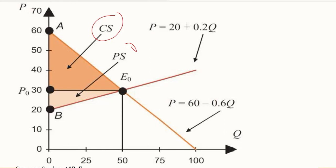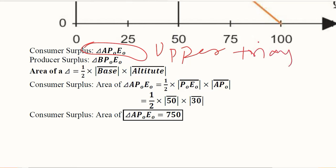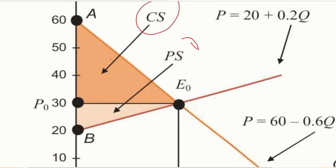Let us see how we can do this. Underneath this diagram we are explaining that the consumer surplus is the upper triangle in the set of triangles, and the producer surplus is the lower triangle. Let us go back and see the upper triangle and the lower triangle based on the equilibrium value.